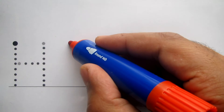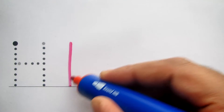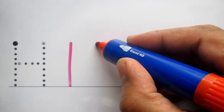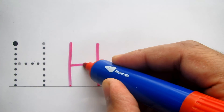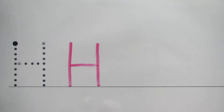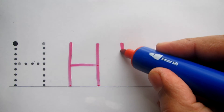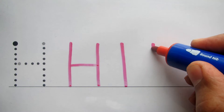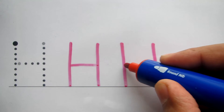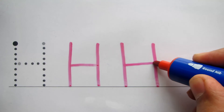The uppercase H, or capital H, is one of the simple letters. It's just two straight lines with a small horizontal line across the middle. Straightforward: one line, two lines, and a little line across.